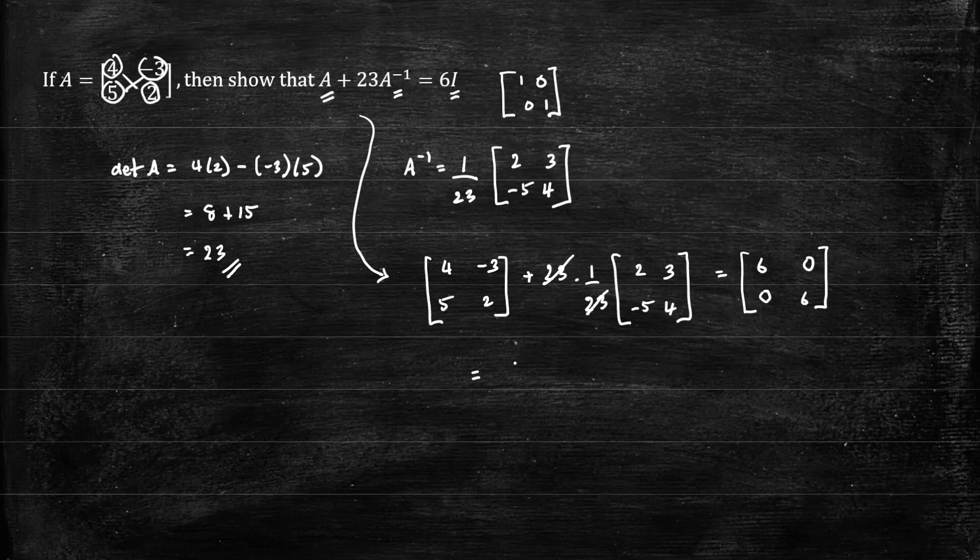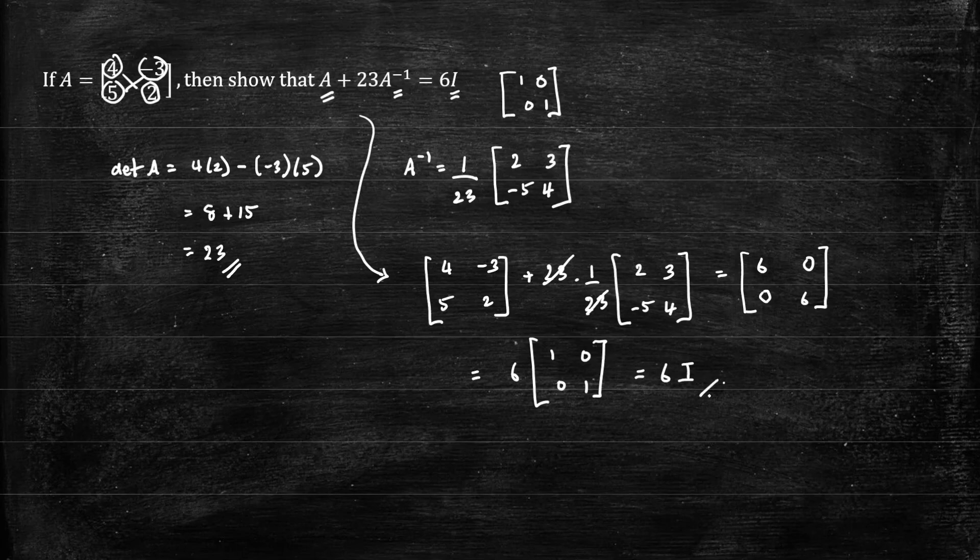And this can be written as 6 as a scalar outside of 1, 0, 0, 1. And we know the identity matrix is 1, 0, 0, 1. So that equals 6I as required.